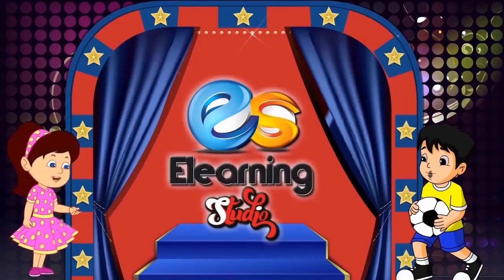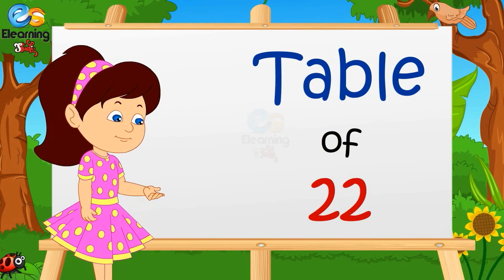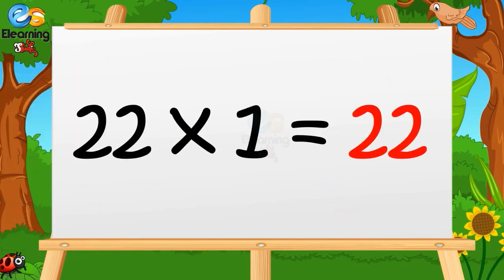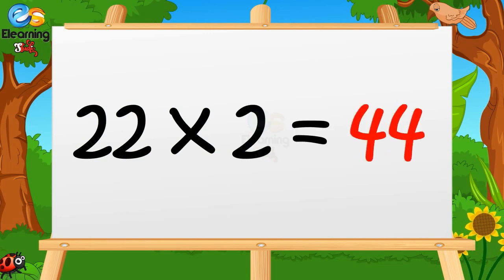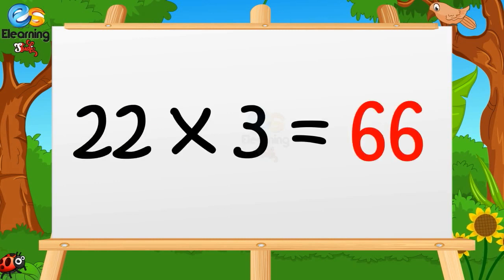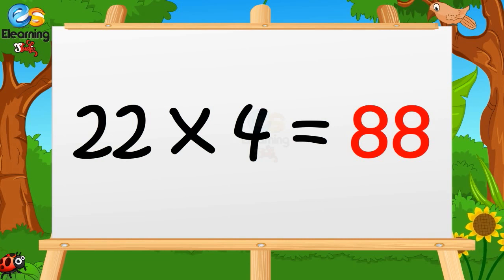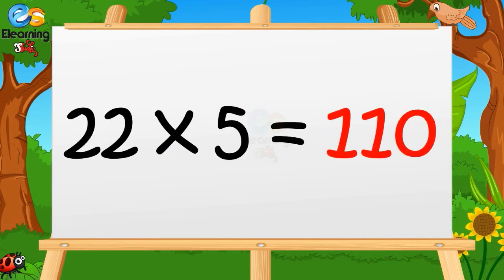E-Learning Studio. Table of Twenty-Two. Today we will learn the Table of Twenty-Two. Twenty-two ones are twenty-two. Twenty-two twos are forty-four. Twenty-two threes are sixty-six. Twenty-two fours are eighty-eight. Twenty-two fives are hundred-ten.